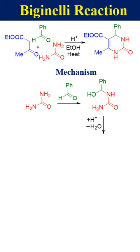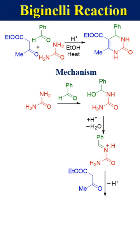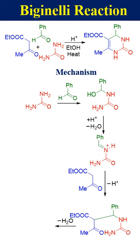The beta-ketoester then adds to the iminium ion to produce an adduct, which undergoes cyclization by removing a water molecule to produce the Biginelli product.